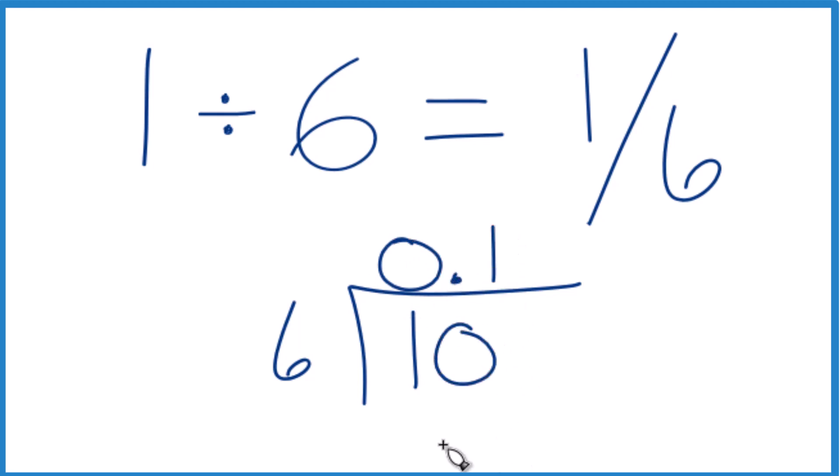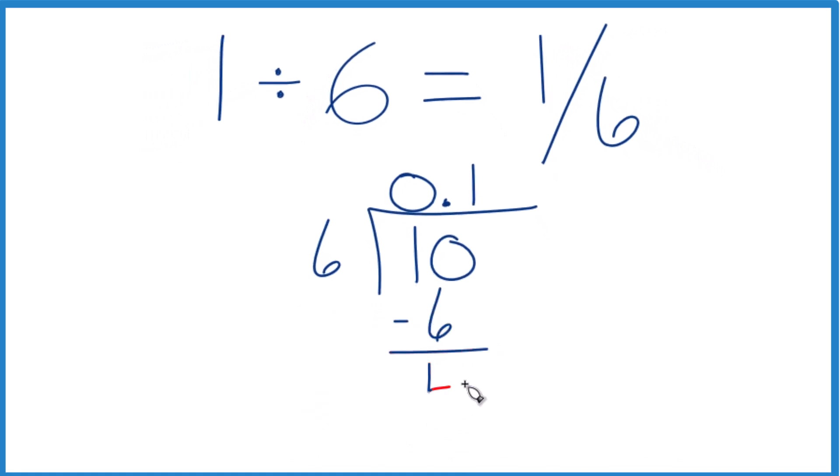Now 1 times 6, that's 6. Subtract and you get 4. 6 doesn't go into 4 so we'll move over 1, call this 40.